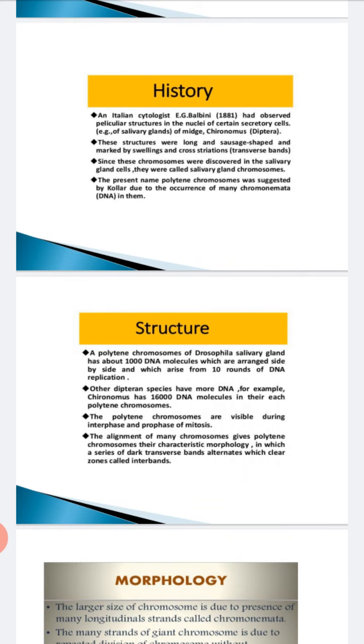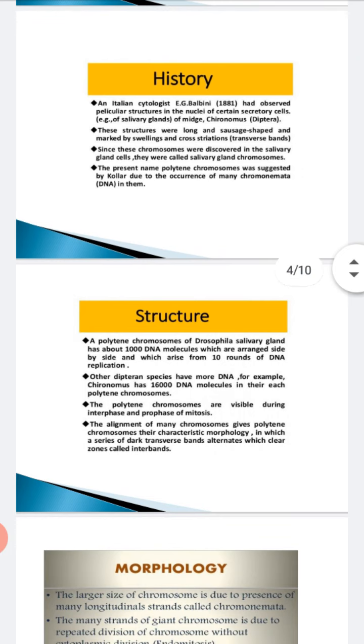The polytene chromosomes are visible during interphase and prophase in mitosis division. The alignment of many chromosomes give polytene chromosomes the characteristic morphology with many dark transverse bands and clear zones which are the inter-bands. I will show you in the next slide where you will be able to see the dark bands and the inter-bands.